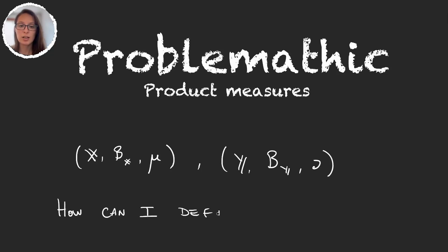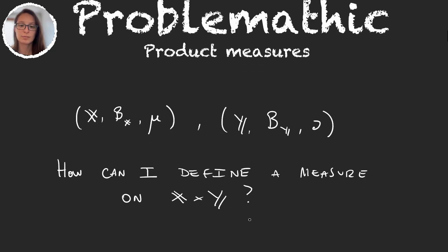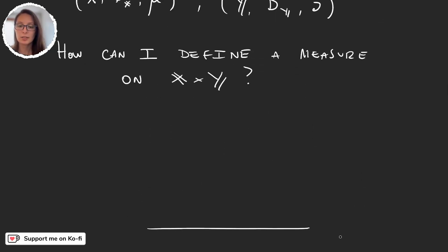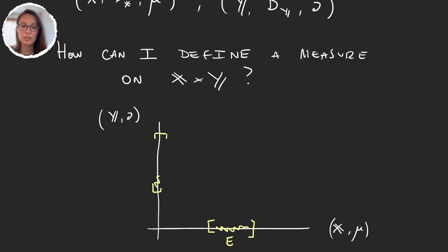My question is, how can I define a measure on the product space? Basically what we want is, if this is X with my measure mu, and I take the product with Y with measure nu, what I want is that if I take just some set here, let's call it E, and some other set on Y, let's call it F, and I take the product of these two sets.